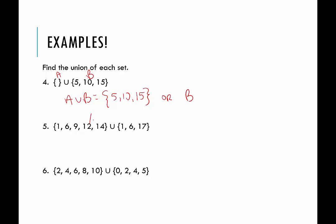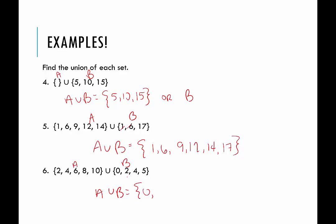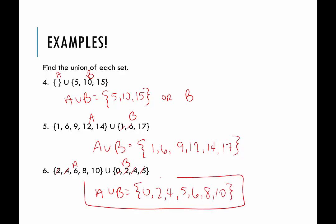In question 5, I'll call this one A and this one B. A union B: I would start listing set A — 1, 6, 9, 12, 14 — and we're only going to add new elements to the union. So 1 is already there and 6 is already there; the only thing to add is 17. For question 6, A union B: starting with 0, then 2 — only listed once — then 4, 5, 6, 8, 10. That would be the union of sets A and B.